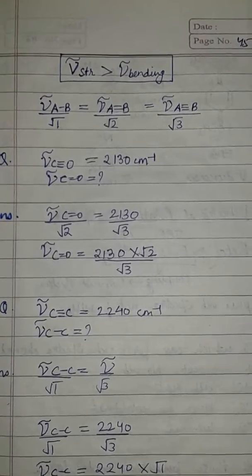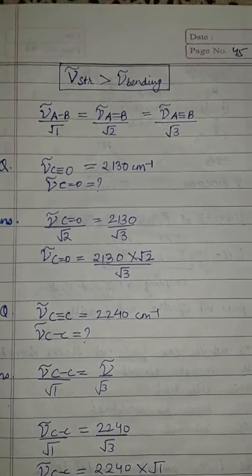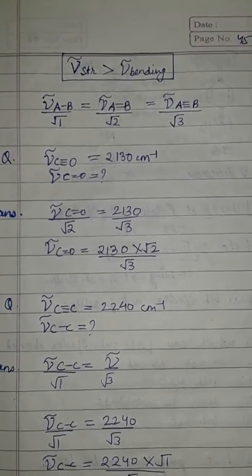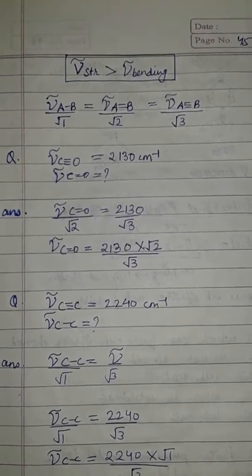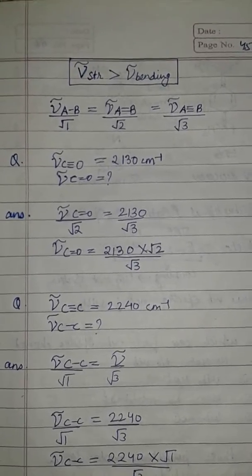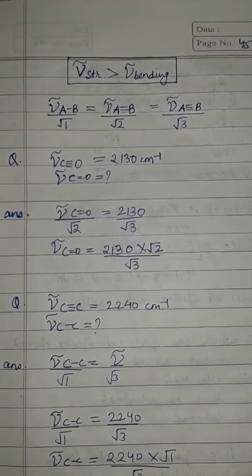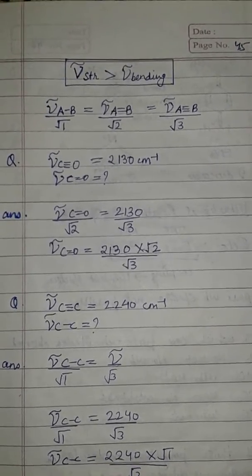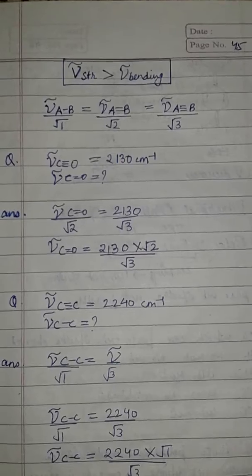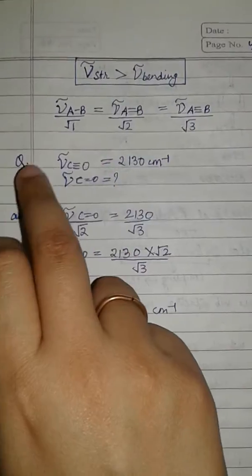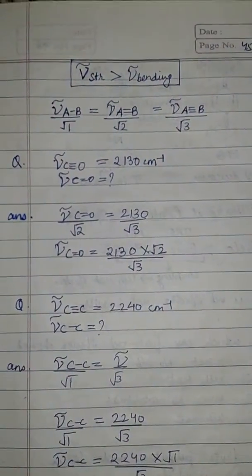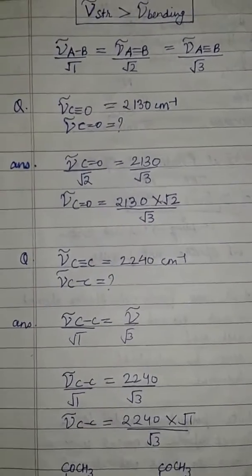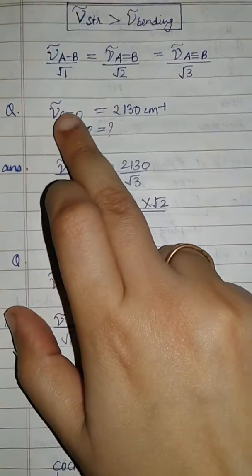The frequency of stretching is always greater than the frequency of bending. The frequency of an AB molecule: if it is single bonded then it is ν_AB divided by root 1, if the same atoms are bonded by a double bond then it is ν_AB divided by root 2, and if it is triple bonded then ν_AB divided by root 3. This relation is used for finding the frequency or wave number.